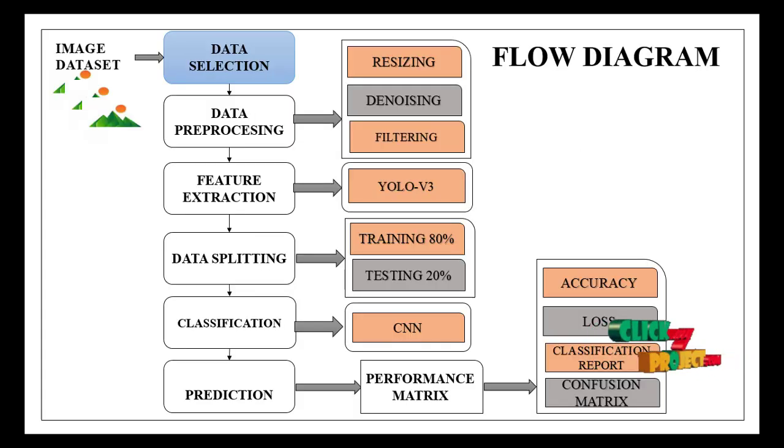Here we use the image dataset. From the data, we want to select particular data and preprocess the dataset. With the steps, we have three kinds of techniques: resizing, denoising, and filtering.